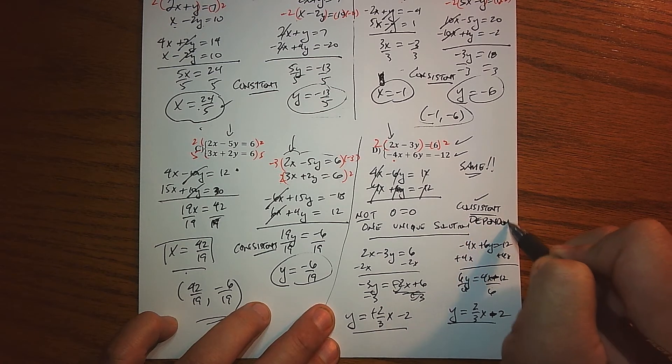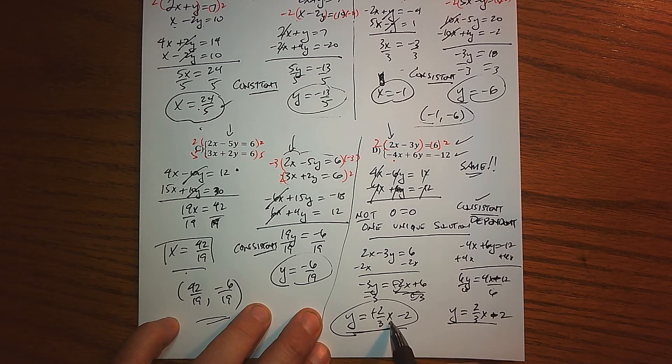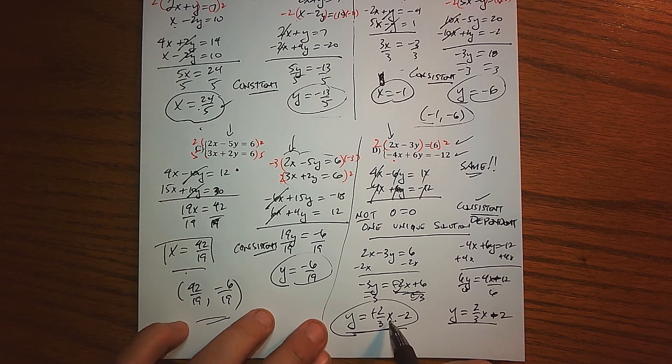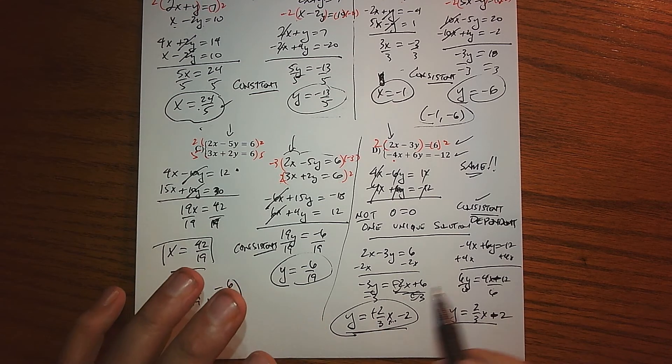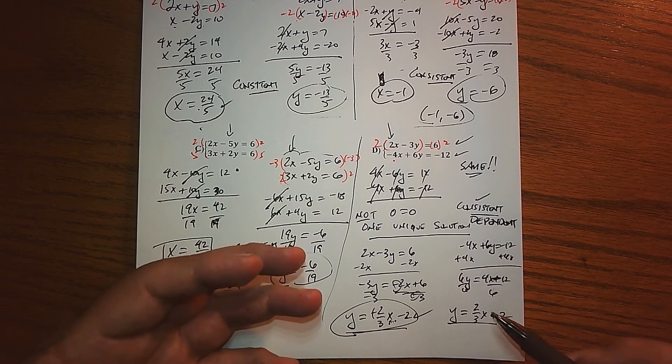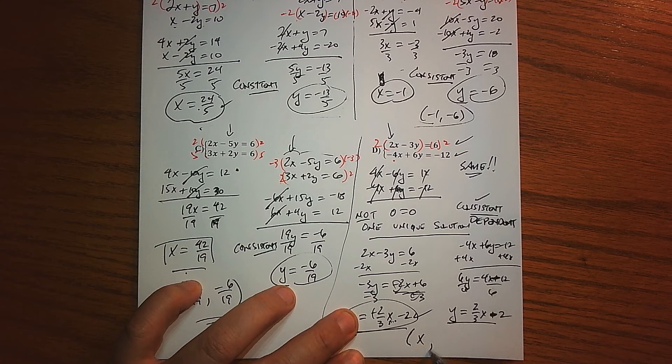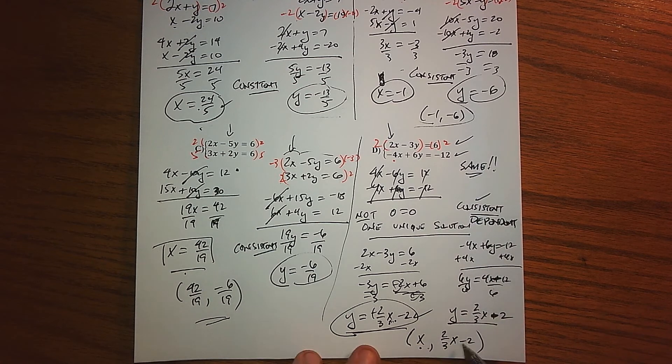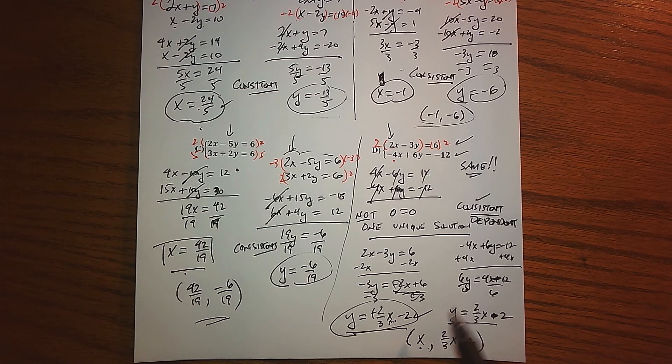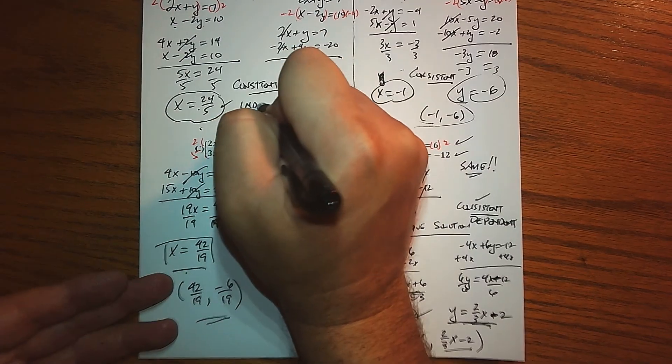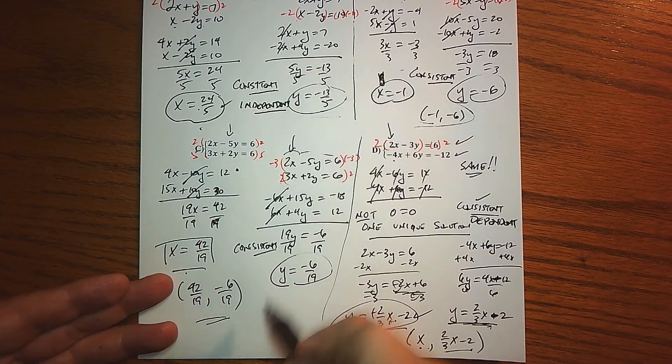Our solution is what we call consistent but also dependent, because my Y value depends on what X is. I tell you what X is: if X is 0, Y is negative 2; if X is 3, Y is 0; if X is 6, Y is 2. There's not one unique solution—there's actually several of them, any point that solves that line. The way we write this answer in ordered pair form is X can be whatever it wants to be, but Y has to be 2/3x minus 2.